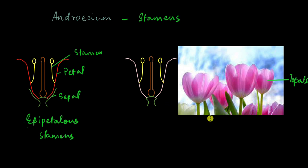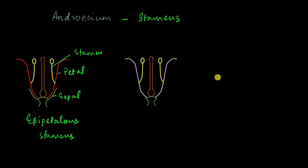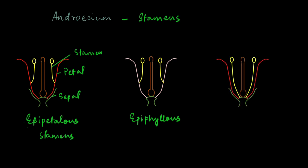The tepals together constitute the perianth, just as the petals together in other flowers constitute the corolla. Similarly, tepals together form the perianth. In some flowers, the stamens are attached to the perianth or the tepals, and these stamens are called epiphyllous. Not in all flowers are stamens attached to something — in some flowers, the stamens are completely free. This classification was about whether stamens are attached to petals or tepals or not.